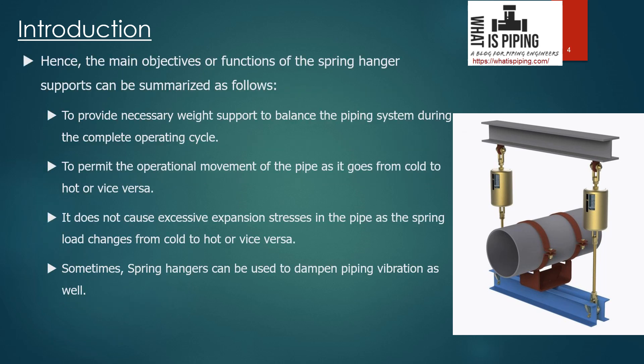The main objectives or functions of spring hanger supports can be summarized as follows: to provide necessary weight support to balance the piping system during the complete operating cycle; to permit the operational movement of the pipe as it goes from cold to hot or vice versa; to not cause excessive expansion stresses in the piping system as the spring load changes from cold to hot; and spring hangers can also be used to dampen piping vibration.